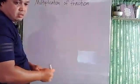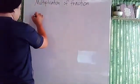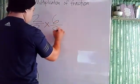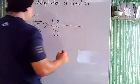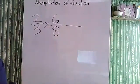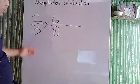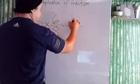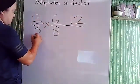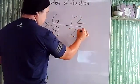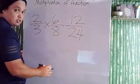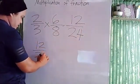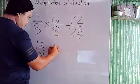Let's have example number two. Let's do 2/3 times 6/8. Same process - just multiply the numerator and multiply the denominator. 2 times 6 is 12, and 3 times 8 is 24. Now the answer is 12 over 24.